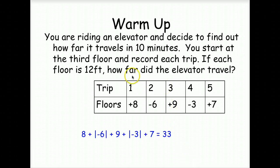So first of all, we're wanting to see how far did the elevator travel. We took five trips, and each trip it went this far, but we're wanting to know how far it traveled each time. So we're going to use absolute value for our negative numbers. So it went a total of 33 12-foot trips. That's 396 feet total.